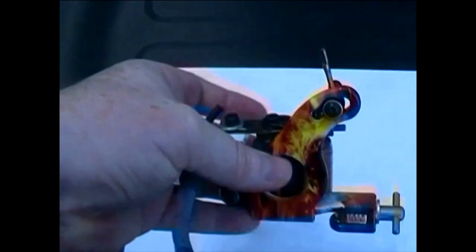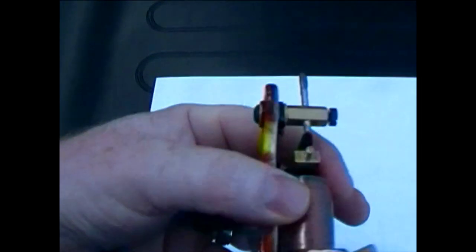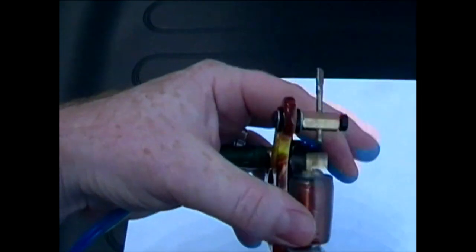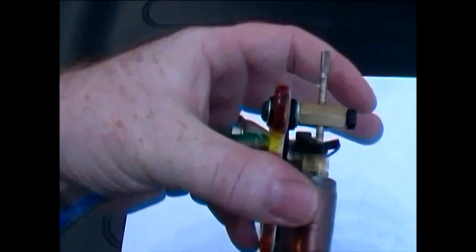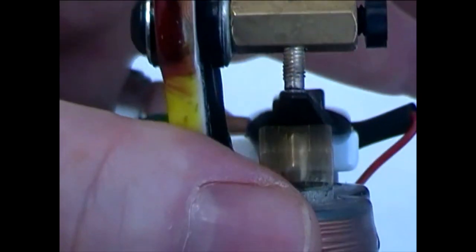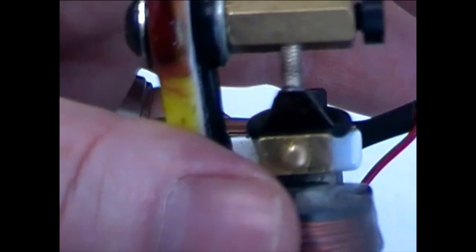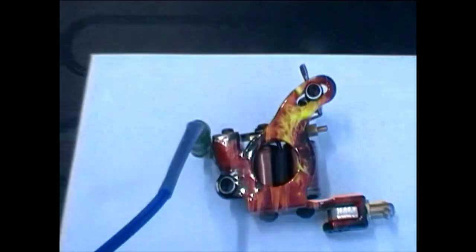So yeah, this is it rigged up. This is my liner, what I use for lining for a long time. Look at that. That's just at six volts. A bit of give in there, but I put a bit more juice in it.